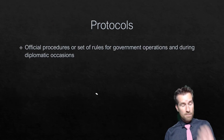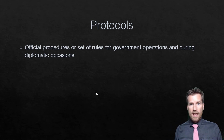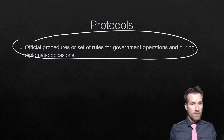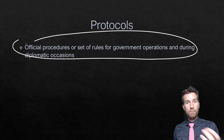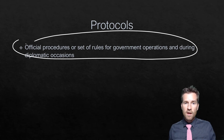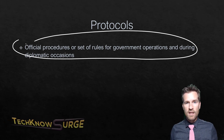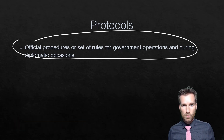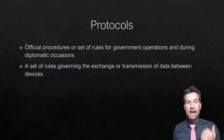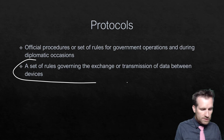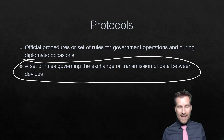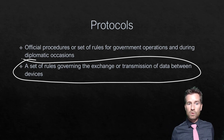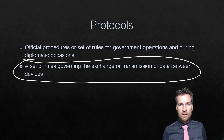Even before computers existed, the word protocol existed. A protocol refers to the official procedures and rules, either for government operations or during diplomatic occasions. Protocols existed as a set of rules during ceremonies or operations — a certain flow, certain procedures, a certain set of rules to it. It's the same thing when we talk about computers: a protocol is a set of rules governing the exchange or transmission of data between devices.